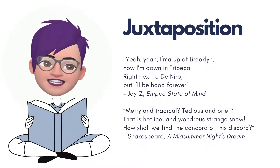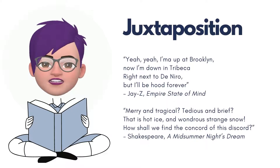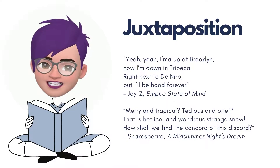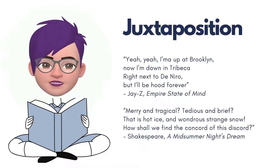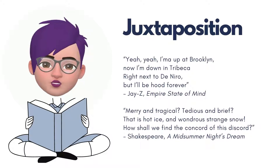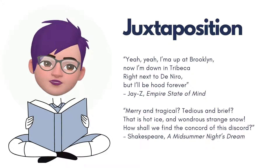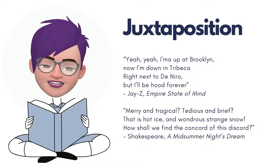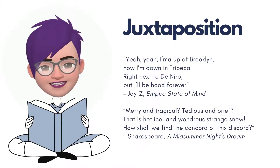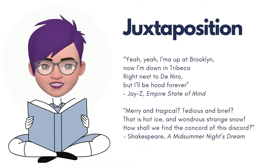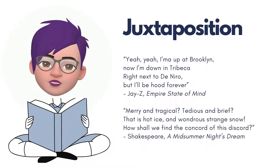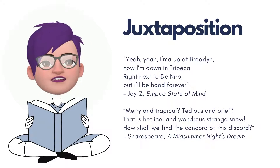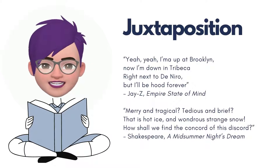Many proverbs in English include examples of juxtaposition, as the contrast between concepts can provide a lesson. For example, we say 'all is fair in love and war.' Love and war are opposites, and yet this proverb shows that they have one thing in common — anything goes. This juxtaposition demonstrates that there is more alike between the concepts of love and war than one might originally think.